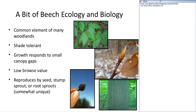Beech has the ability to reproduce by seed — you can see the spiny husk in the lower left-hand corner — or it can reproduce by stump suckers. If a tree is cut, the stump will sprout and the roots will sprout. The roots will sprout no matter what, but especially if the parent tree is injured or killed, either by cutting or by disease.